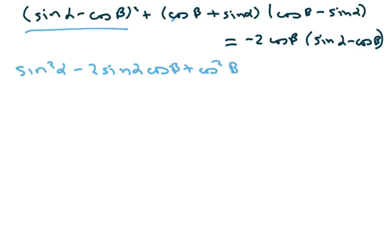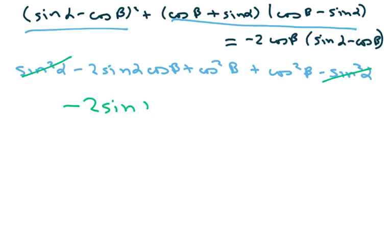So that's that part, and this is your difference of squares, so this is just going to be plus cosine squared of beta minus sine squared of alpha. And what happens is the sine squares cancel, and we're left with negative 2 sine of alpha by cosine of beta, there's 2 of those, so it's 2 cosine squared of beta.